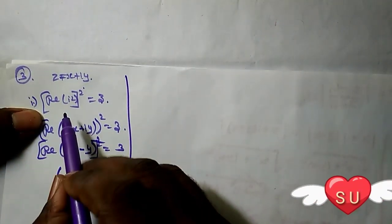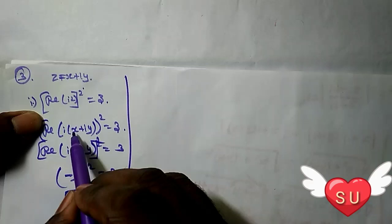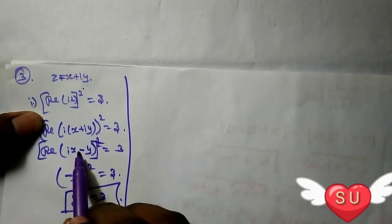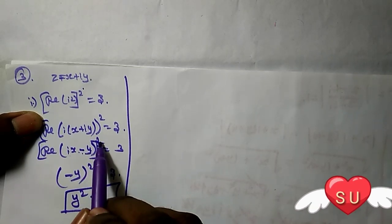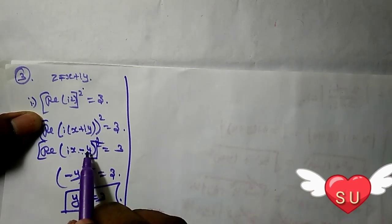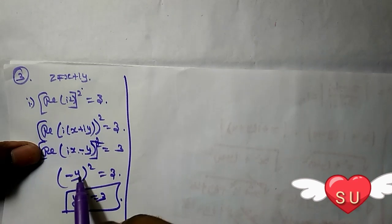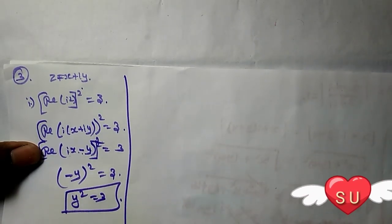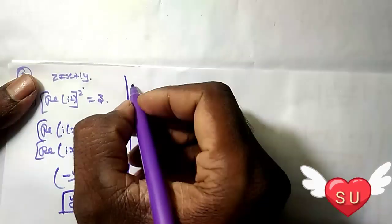Friends, remember the method: real of iz is obtained by substituting z equals x plus iy. After expanding, i² equals minus 1 gives us minus y. Taking the real part, we get minus y squared, so y² equals 3.